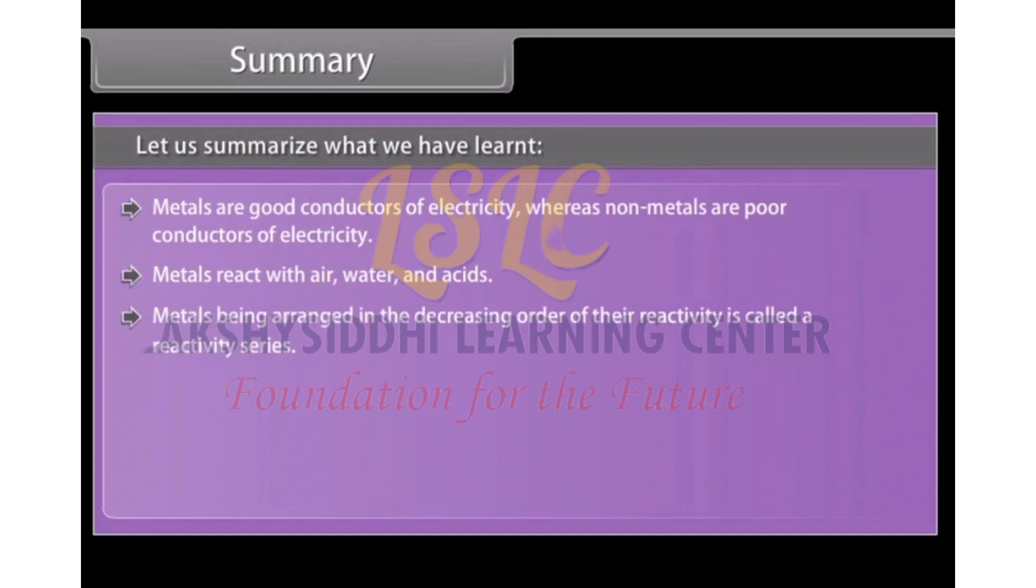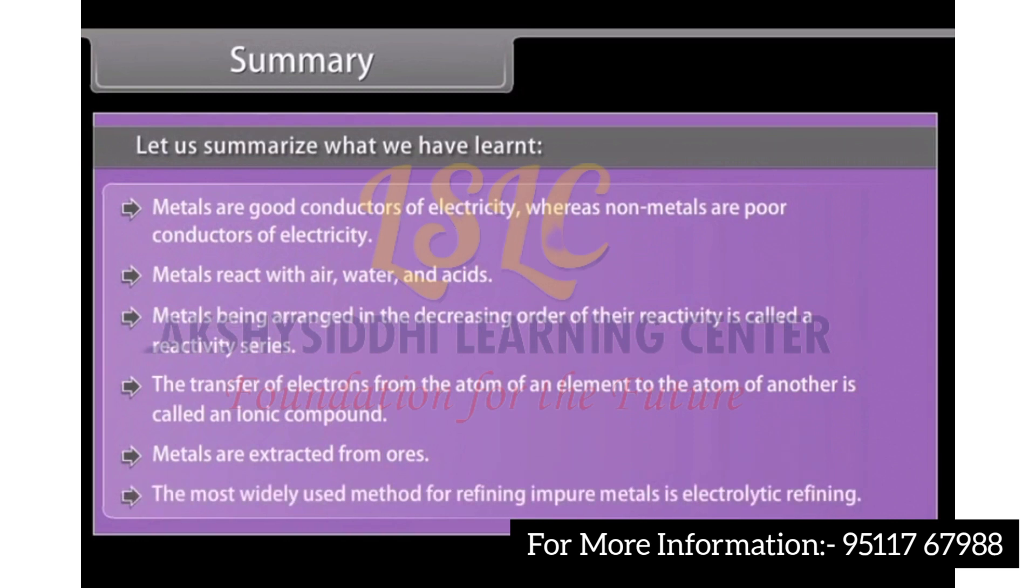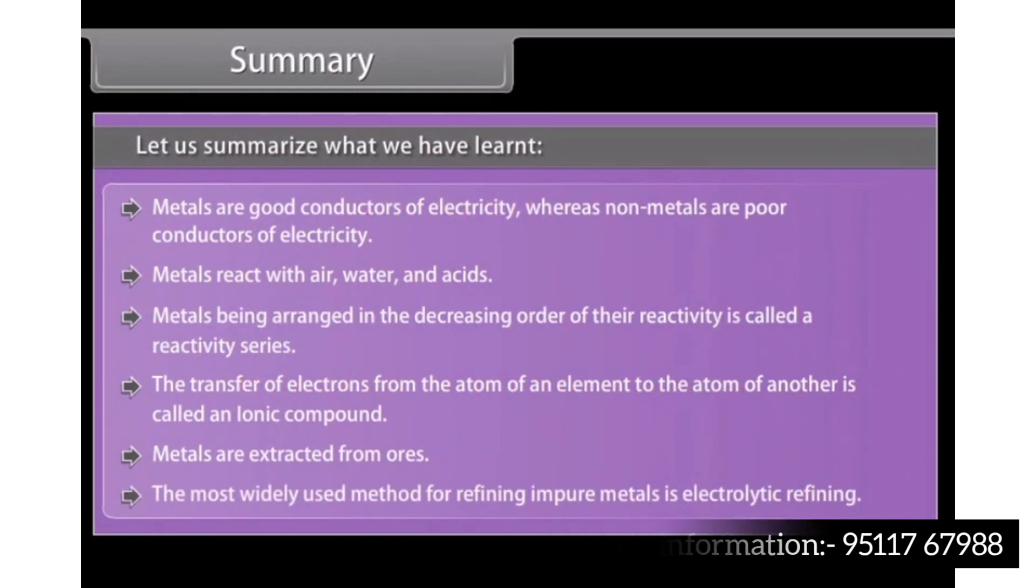Metals being arranged in the decreasing order of their reactivity is called a reactivity series. The transfer of electron from the atom of an element to the atom of another is called an ionic compound. Metals are extracted from ores. The most widely used method for refining impure metals is called electrolytic refining.